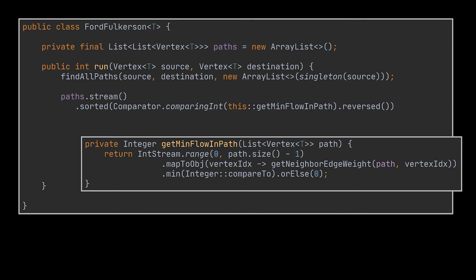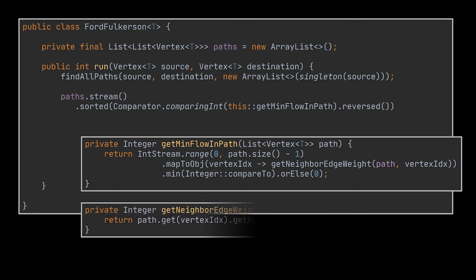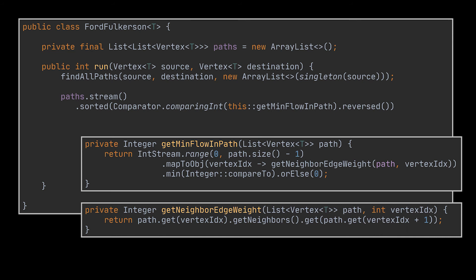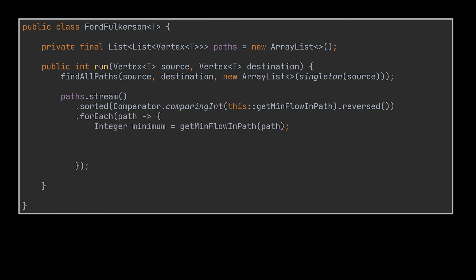To get the minimum flow of a path we used this helper method. What it does is simply retrieve the weights of the edges inside the path we are traversing, then fetch the minimum of these weights and return it. To do that we are traversing the path and for each vertex we are retrieving its direct next neighbor used in this path from the map of neighbors. Note that the IntStream.range method has an exclusive end boundary and that's great because if we call this logic on the T or destination vertex we will get an index out of bounds exception.